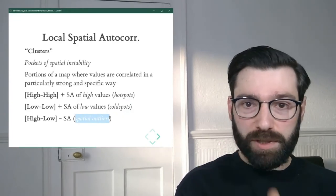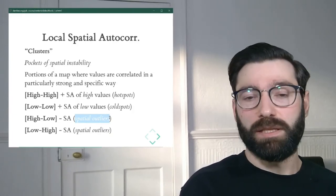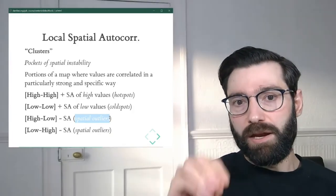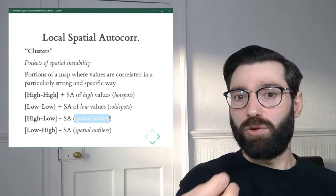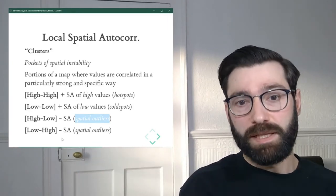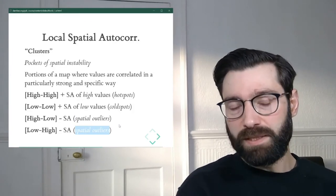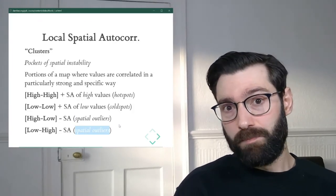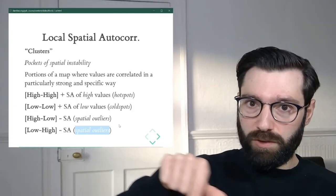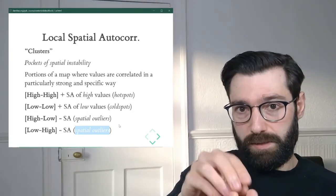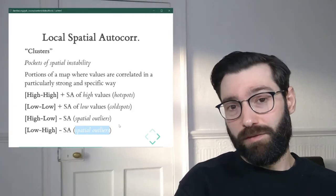And the opposite case of spatial outliers is where we have an area of low values surrounded by high values. This is another instance of spatial outliers. And sometimes you might see these referred to informally as a donut, because you have high values surrounding like an empty space of low values.